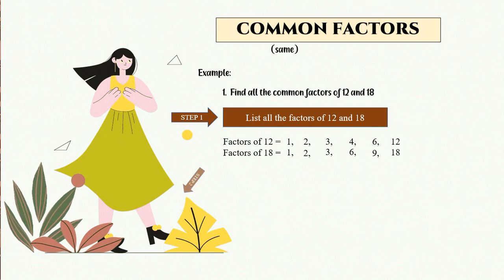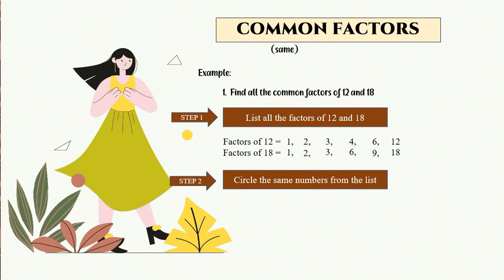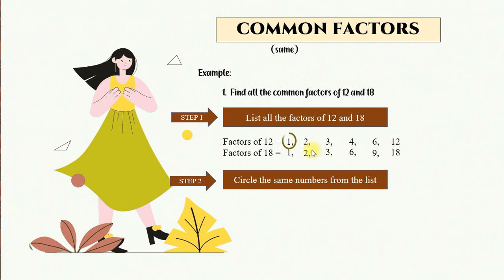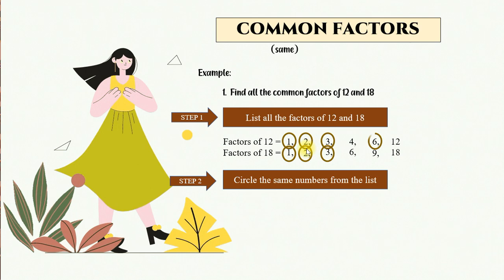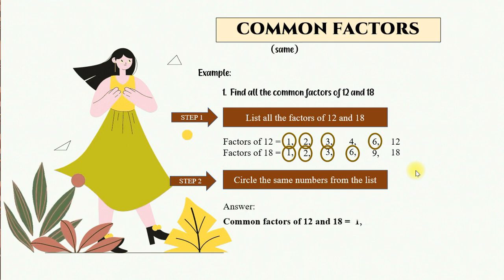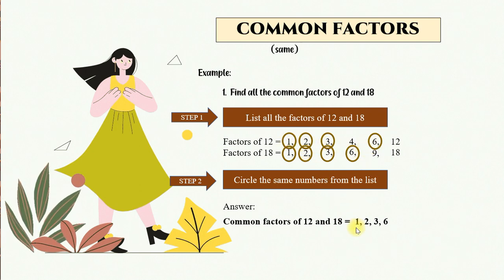Step 2: we circle the same numbers from the list. We have factors of 12: 1, 2, 3, 4, 6, 12, and factors of 18: 1, 2, 3, 6, 9, 18. We compare and circle the same numbers: 1, 2, 3, and 6. These numbers appear in both 12 and 18. So, the common factors of 12 and 18 equal to 1, 2, 3, and 6.